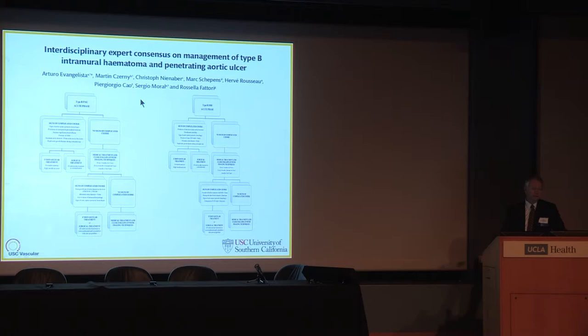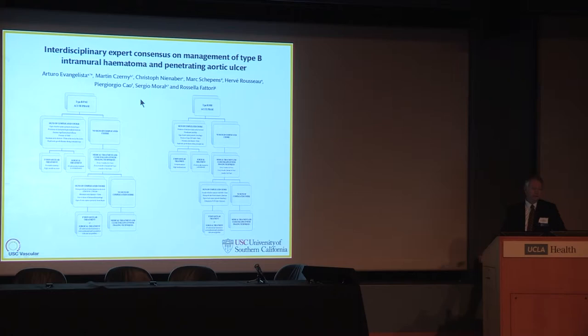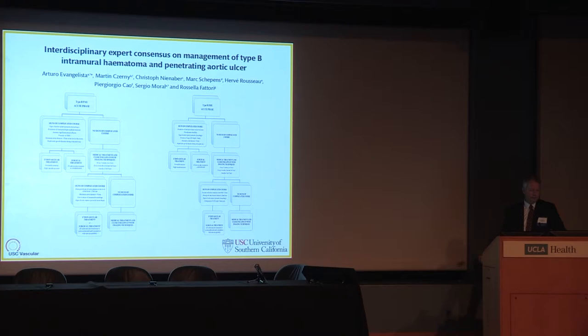The management algorithm in your syllabus gives guidance on the decision to proceed with repair. In general, symptomatic patients should be repaired. In patients with associated intramural hematoma, there should be a very low threshold for repair. Given this patient population, thoracic endovascular repair is really the preferred technique.